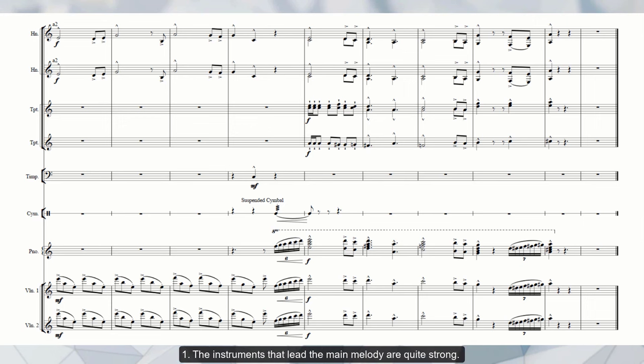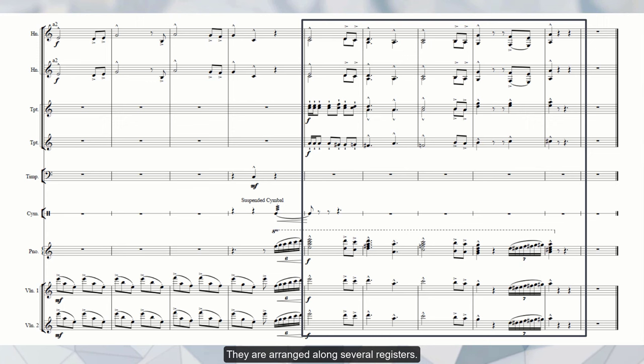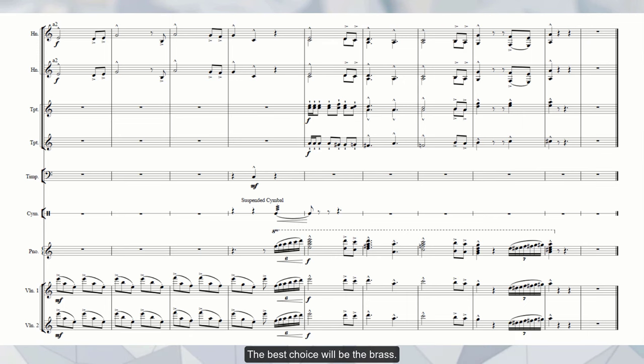First, the instruments that lead the main melody are quite strong. They are arranged along several registers. Second, they are rich in articulations that will create a fullness. Third, they play with strong dynamics. So, we have to look at the instruments that will be equal in timbre to them. If you use the low woodwinds, they will be weaker against brass and strings. Even if they are combined with strings, we will not be able to get the wanted fullness. The best choice will be the brass.